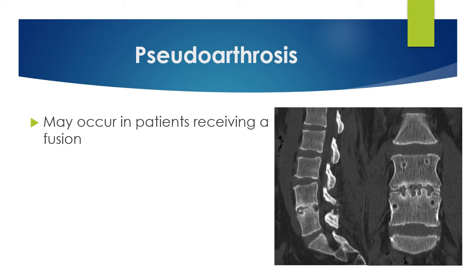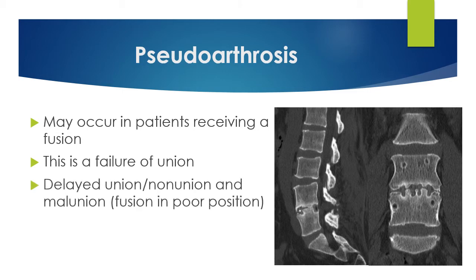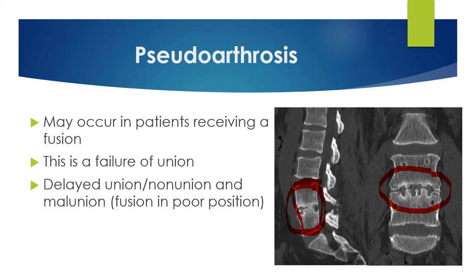Pseudoarthrosis can occur with patients receiving a fusion. It is defined as a failure of union or failure of fusion. This leads to chronic pain and can cause symptoms such as numbness and tingling or shooting pain in the lower extremities. As seen in the picture, the vertebrae appear fused, but a blown-up view reveals a gap in the middle — this is pseudoarthrosis.